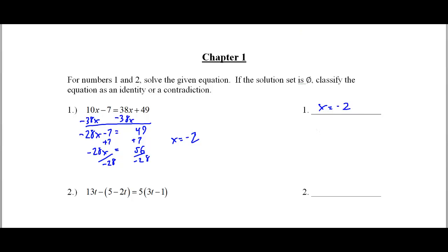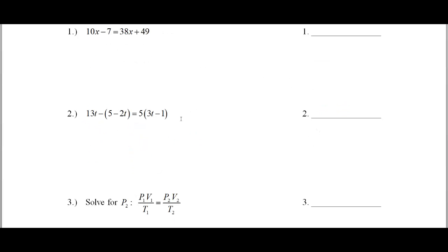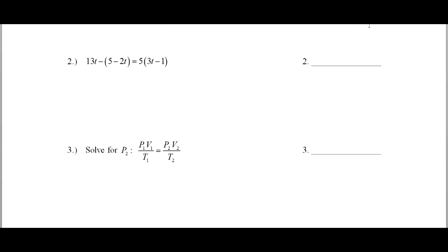Okay, let's look at problem number 2. What we're going to do is distribute the negative to this set of parentheses. Distribute the 5 to this set of parentheses. So this is 13t minus 5 plus 2t is equal to 15t minus 5.